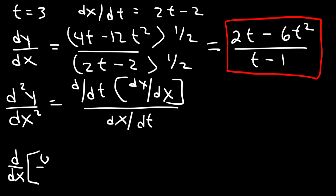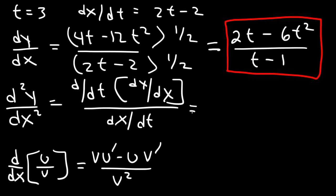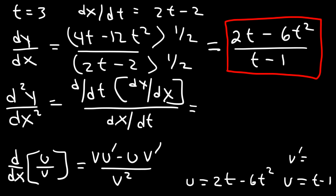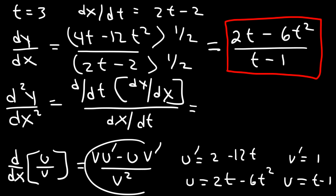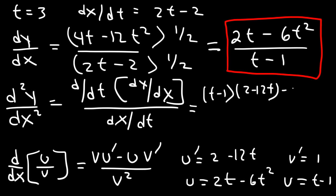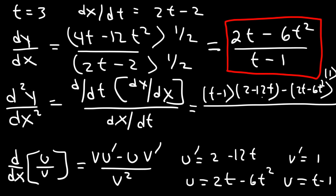The derivative of u over v is v·u prime minus u·v prime divided by v squared. So u in this case is 2t minus 6t squared, and v is t minus 1. So v prime is 1, and u prime is 2 minus 12t. Following this equation, it's going to be v, which is t minus 1, times u prime, so that's 2 minus 12t, and then minus u, which is 2t minus 6t squared, times v prime, which is just 1, divided by v squared, which is t minus 1 squared.